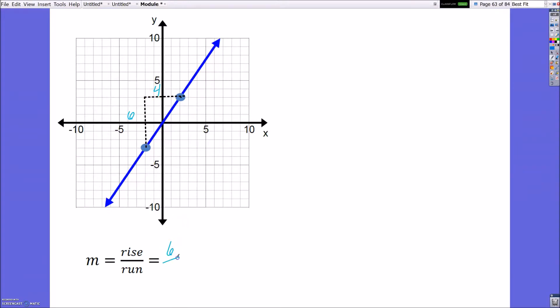1, 2, 3, 4 points. So my rise over run is 6 over 4. So I went up 6 over 4. Now, looking at this, what's the big deal of that?